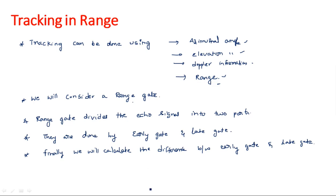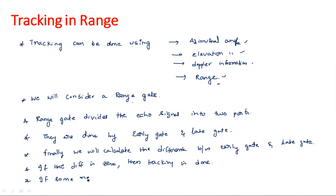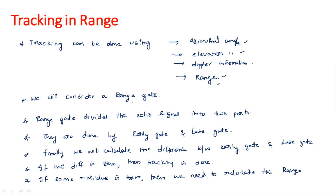If the difference is zero, then tracking is done. If some residue remains after taking the difference between the early gate and late gate, then we need to relocate the range gate. This is the meaning of tracking using range.